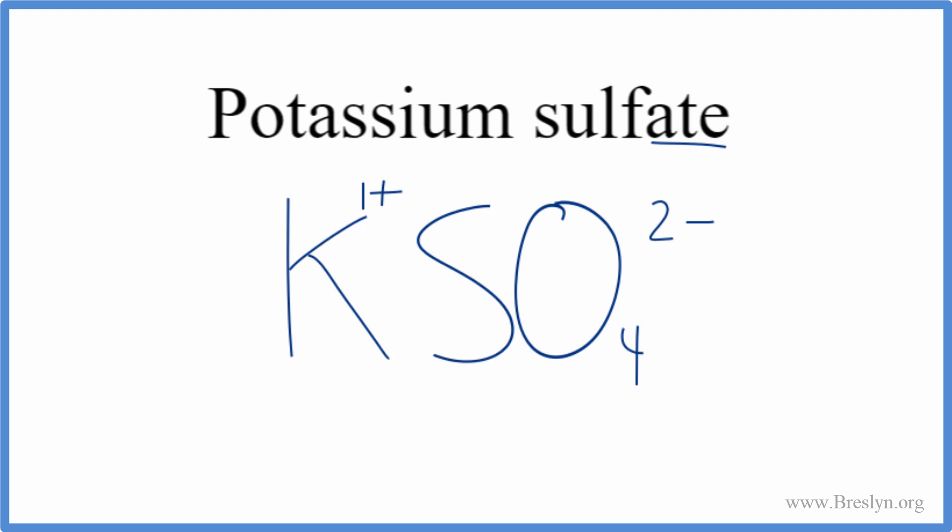We use something called the crisscross method. We'll take the 2, put it down here, and the 1 out here. We don't write the 1 by convention, and let's get rid of this here. And that's it. That's the formula for potassium sulfate, K2SO4.